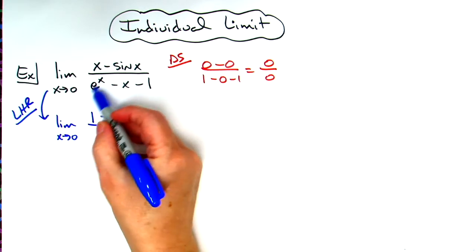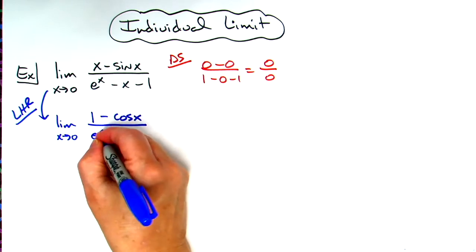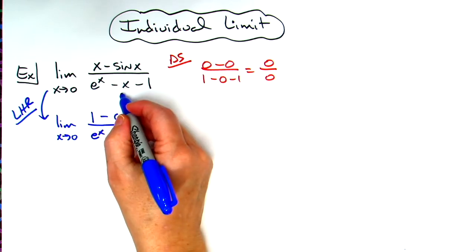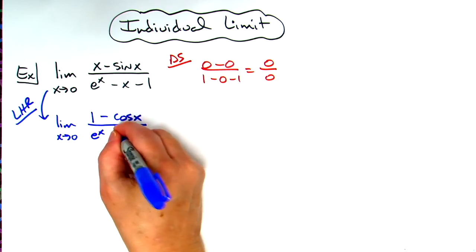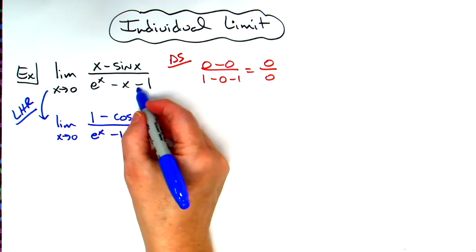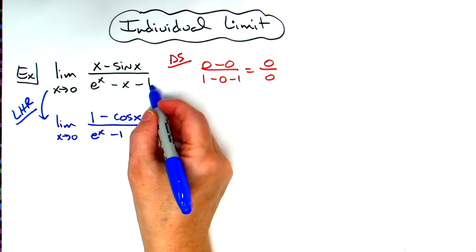Derivative of e to the x is e to the x. Derivative of x is one, so e^x minus one. The derivative of the constant minus one falls out.